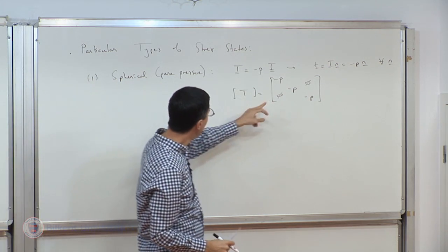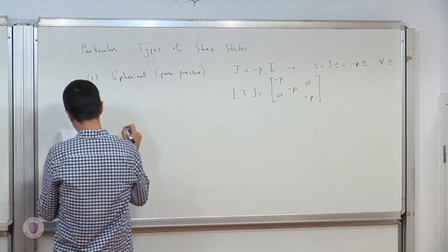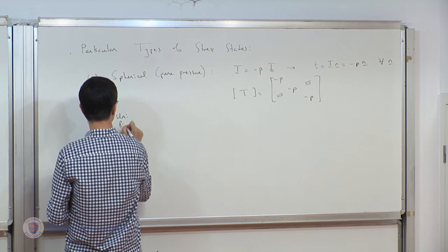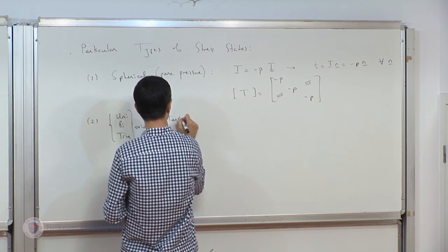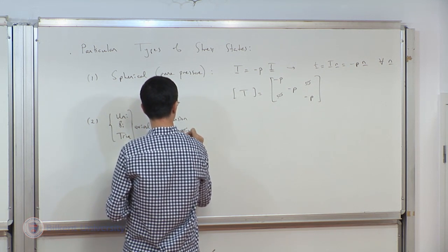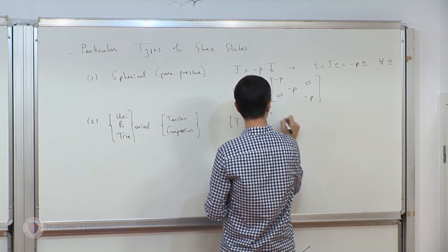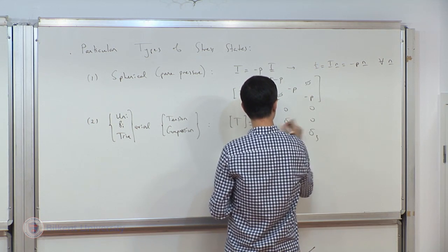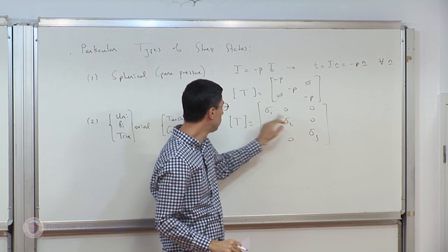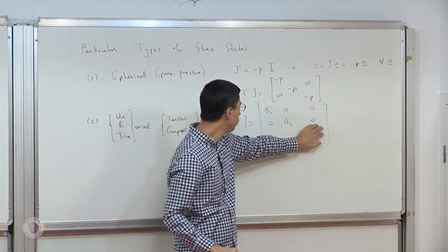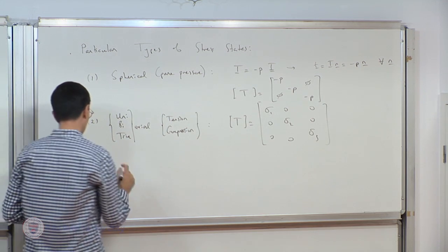A second state has only diagonal components that are not all equal to one another, giving uniaxial, biaxial, or triaxial tension or compression depending on the sign. In matrix form, the diagonal entries are sigma_1, sigma_2, sigma_3, with all off-diagonal components zero. If only sigma_2 is nonzero, that is uniaxial along direction 2; if two are nonzero it is biaxial; if all three are nonzero it is triaxial, and they need not be equal.